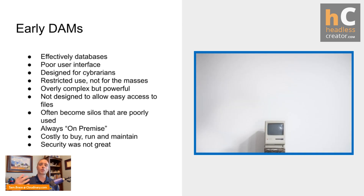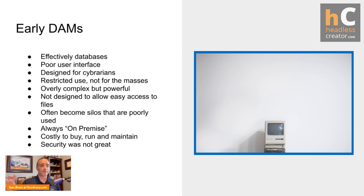Early DAMs were ultimately databases. You might be thinking of things like cloud-based storage — Amazon S3, Google Cloud Storage, Google Drive — but originally these systems were not meant to be used by just anybody. They were meant for a specific type of person called a DAM librarian. As asset management systems became digital, they sometimes had fun names like 'cybrarian,' but they were very powerful for that specific person.